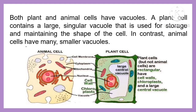Both plant and animal cells have vacuoles. A plant cell contains a large, singular vacuole that is used for storage and maintaining the shape of the cell. In contrast, animal cells have many smaller vacuoles.